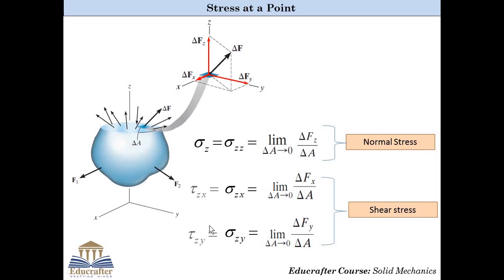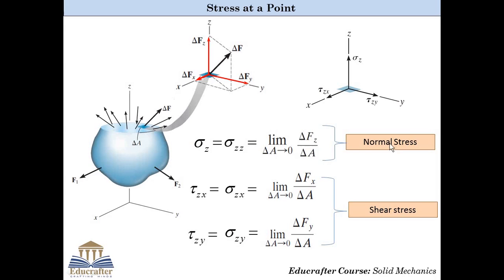Usually, shear stresses are represented by the symbol tau and normal stresses by the symbol sigma. So sigma Z is the same as sigma Zz. Tau Zx is similar to sigma Zx, and tau Zy is the same as sigma Zy. Thus, sigma Z is the normal stress acting on the Z plane in the Z direction, tau Zx is the shear stress acting on the Z plane along the X direction, and tau Zy is the shear stress acting on the Z plane along the Y direction.